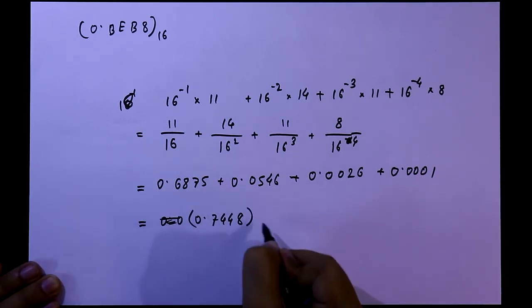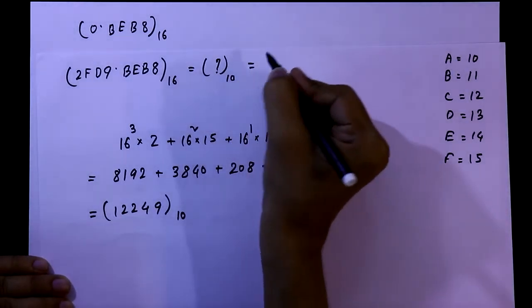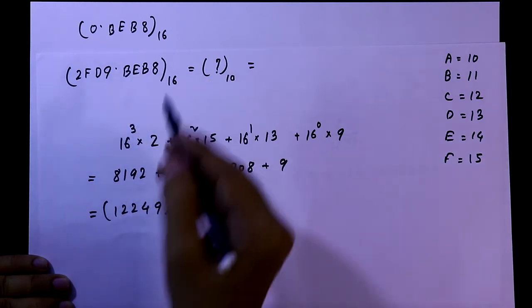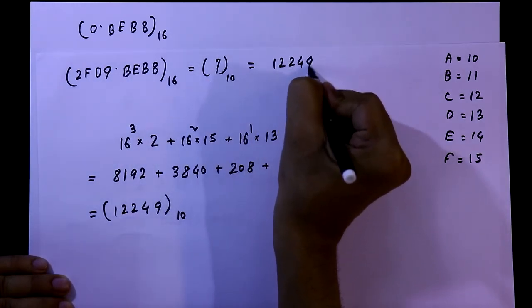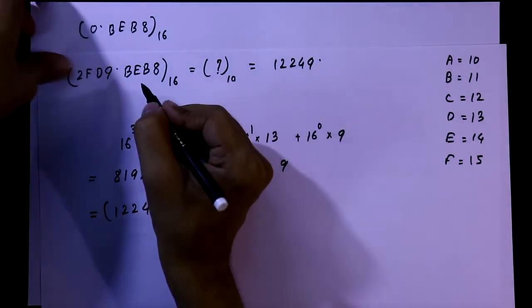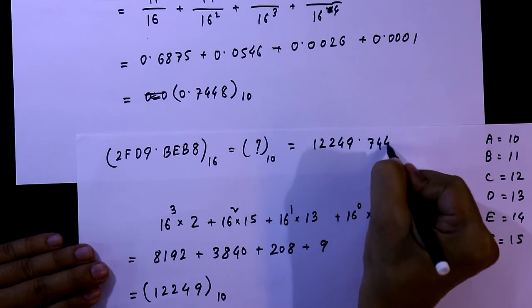So the final result will be, in the integer part, it is 12,249 point, in the fractional part, it is 7, 4, 4, 8.